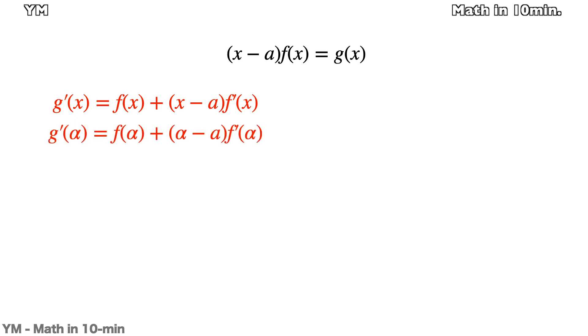At this point, g'(α) is f(α) + (α - a)f'(α). Since f has a local maximum value M at x equals α and β, f(α) is M and f'(α) is zero. So g'(α) is simplified to M.